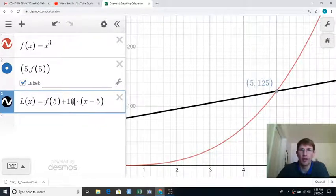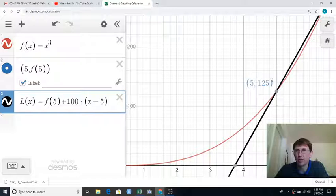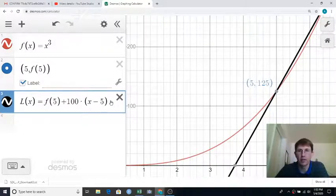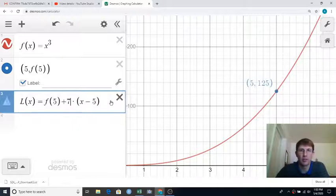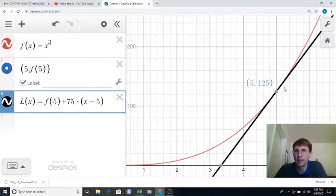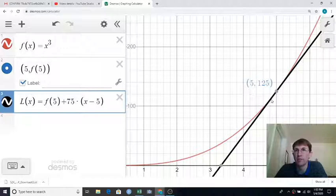Or what if we had had 100? Well, it's better, but it still could have been better. At 75, it does actually look tangent to the line in a geometric sense, that it only hits the line at one point.